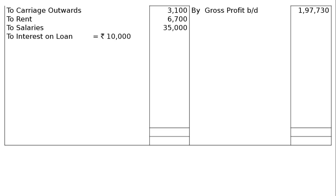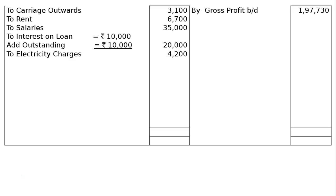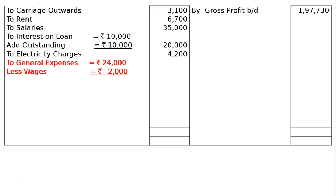This is a hidden adjustment, not given in the stated adjustments. Hence, we add outstanding interest on loan of Rs. 10,000, making total interest Rs. 20,000. This outstanding amount will be shown under current liabilities in the balance sheet. Next, electricity charges Rs. 4,200; to general expenses Rs. 24,000, out of which Rs. 2,000 relates to wages. We deduct Rs. 2,000 — which was added to wages — leaving Rs. 22,000 in the final column.